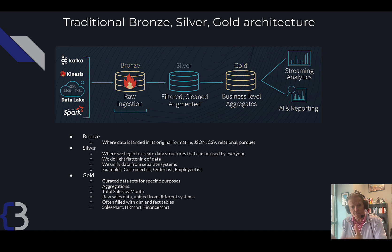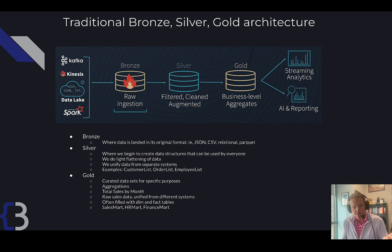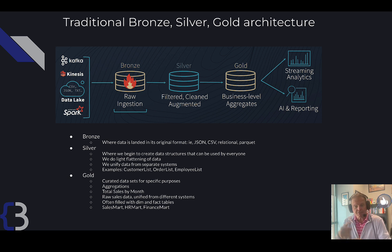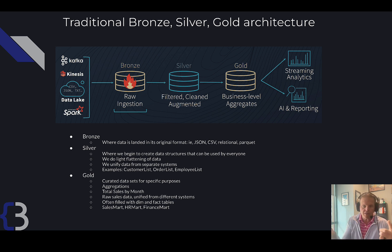Gold contains business-level aggregation data. This is where we choose the granularity of the data we're going to store — we might aggregate it to the day level. For example, if we're McDonald's storing how many hamburgers were purchased, we wouldn't store each individual hamburger because the data would be too much. But we might store by hour or by day how many we sold. The granularity would be different if we were selling houses, where every house is statistically significant, so we'd store the actual transaction.